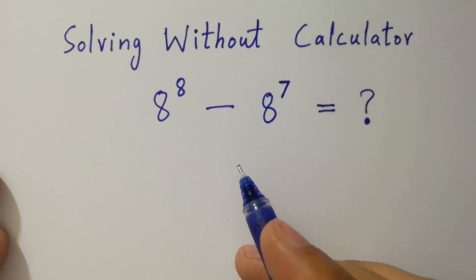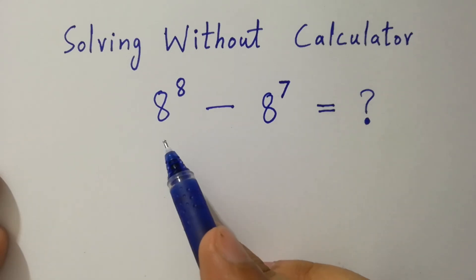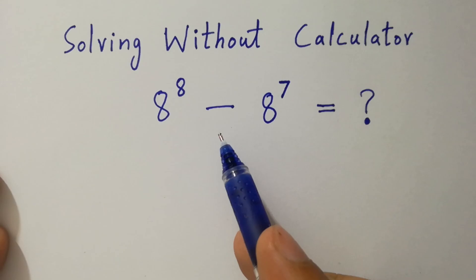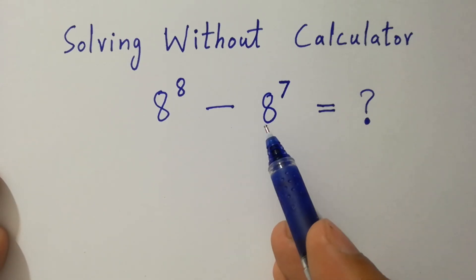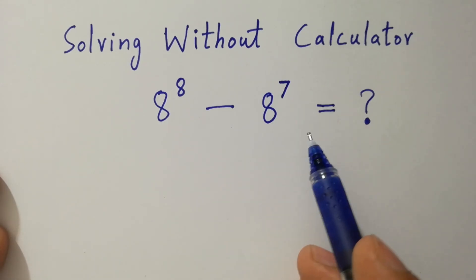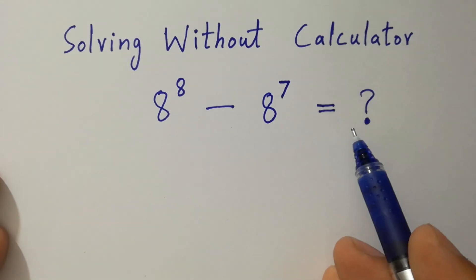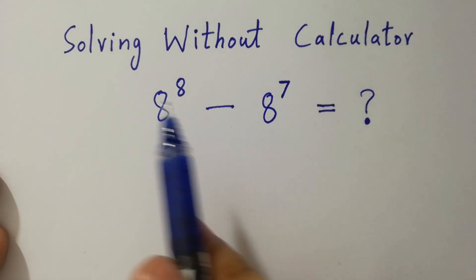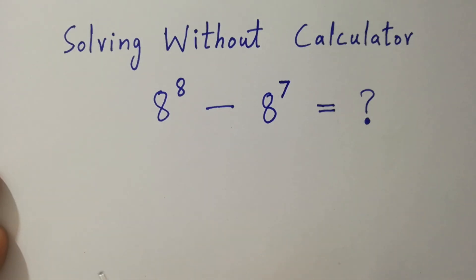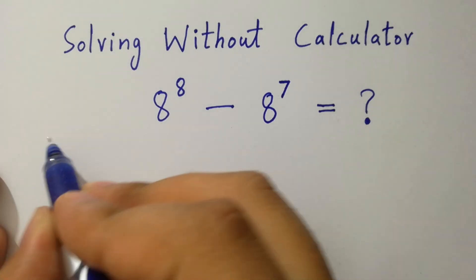Hello friends. 8 to the power 8 minus 8 to the power 7 equals what? Solving without a calculator. Let's have a solution.